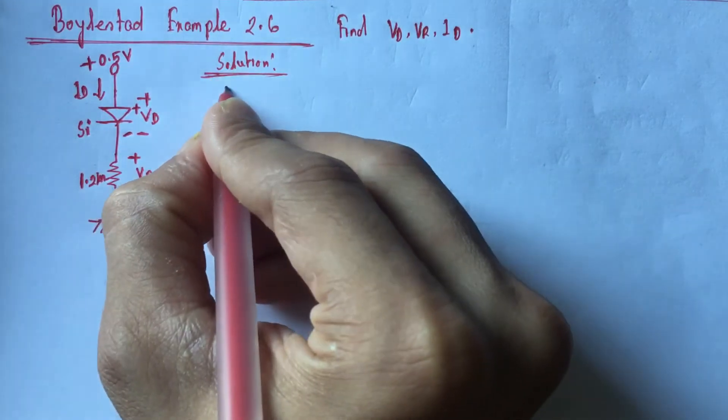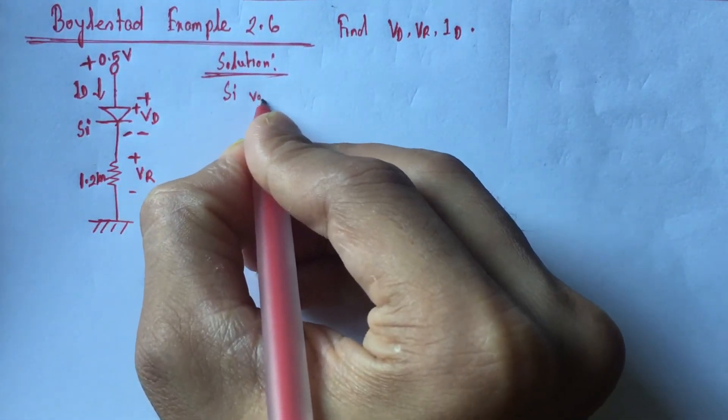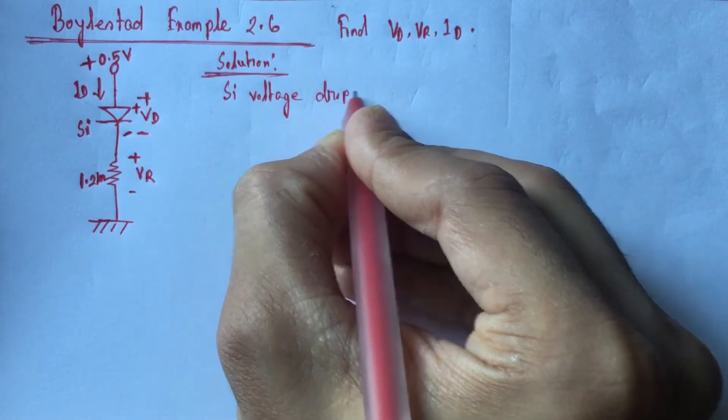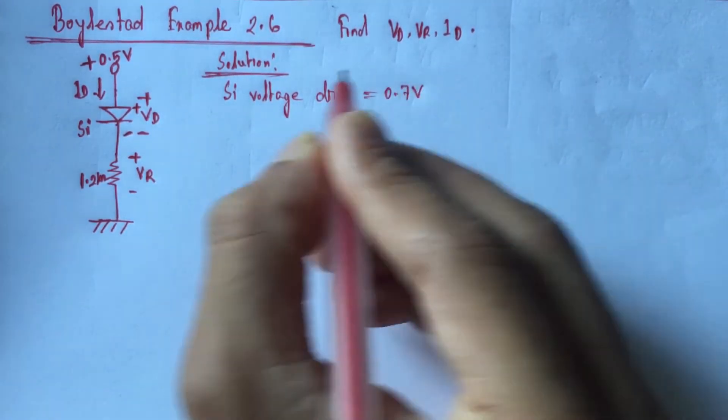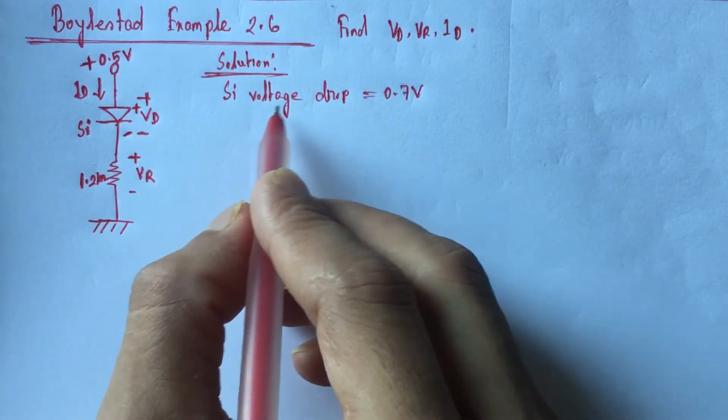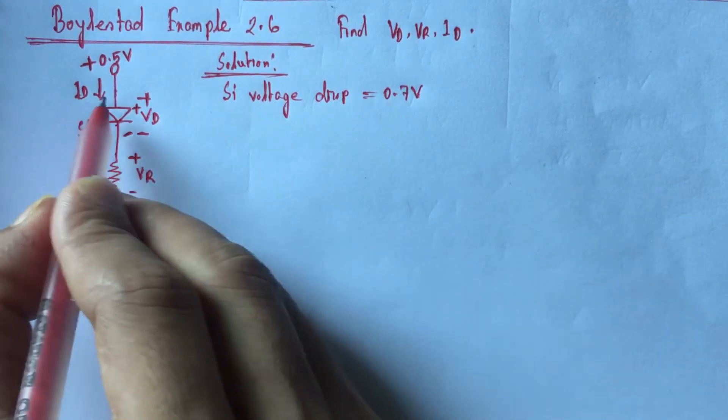Silicon diode has a voltage drop of 0.7 volt. Although the diode is forward biased, but due to lower voltage than the voltage drop 0.7 volt, the diode will remain off.